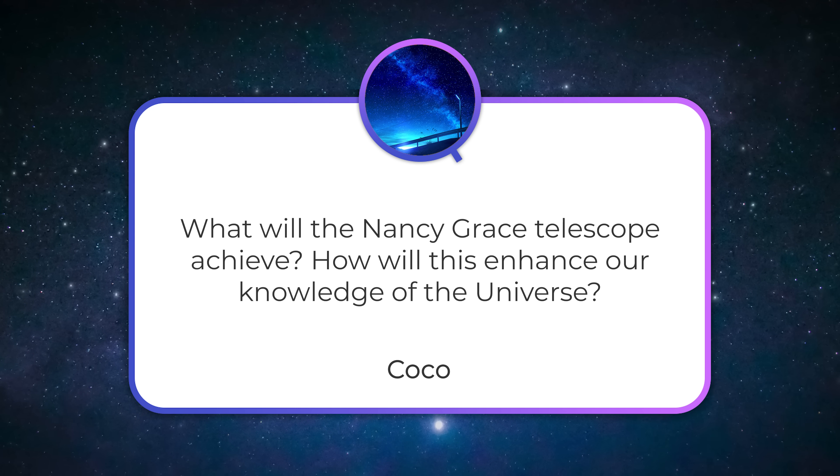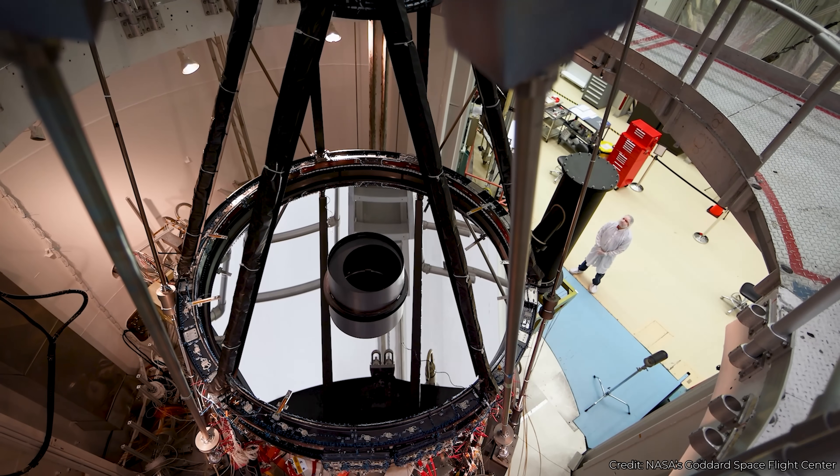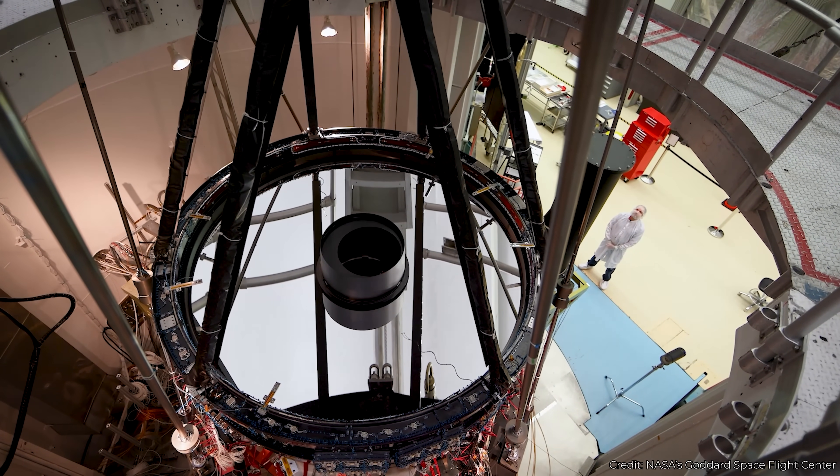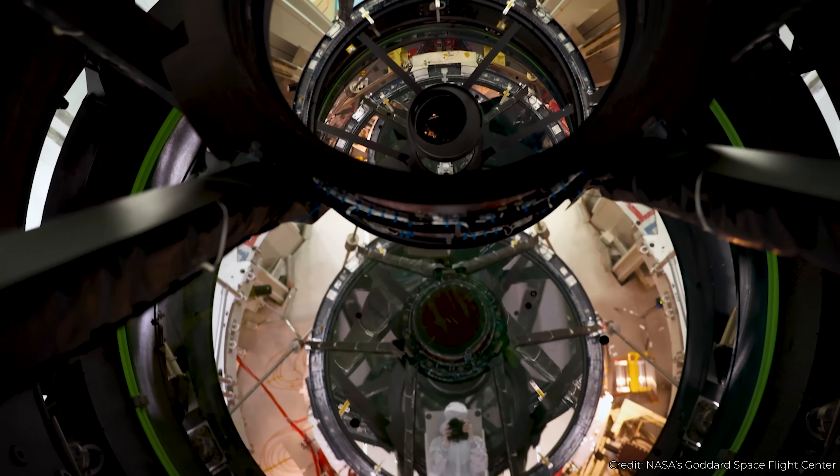What will the Nancy Grace Roman Telescope achieve, and how will it enhance our knowledge of the universe? The Nancy Grace Roman Telescope is going to be the next great observatory launched by NASA, launching in 2027. It's actually a hand-me-down from the Air Force — about 20 years ago, the U.S. Reconnaissance Office gave NASA two of its old Hubble-class telescope mirrors, 2.5-meter mirrors, saying they didn't need them. NASA is going to use one of them for the Nancy Grace Roman Telescope.